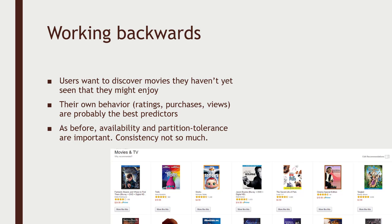Their own behavior is probably the best predictor of movies that they might like. So if they liked a certain set of other movies, you can probably figure out what new movies they haven't seen are similar to those movies that they might also enjoy.